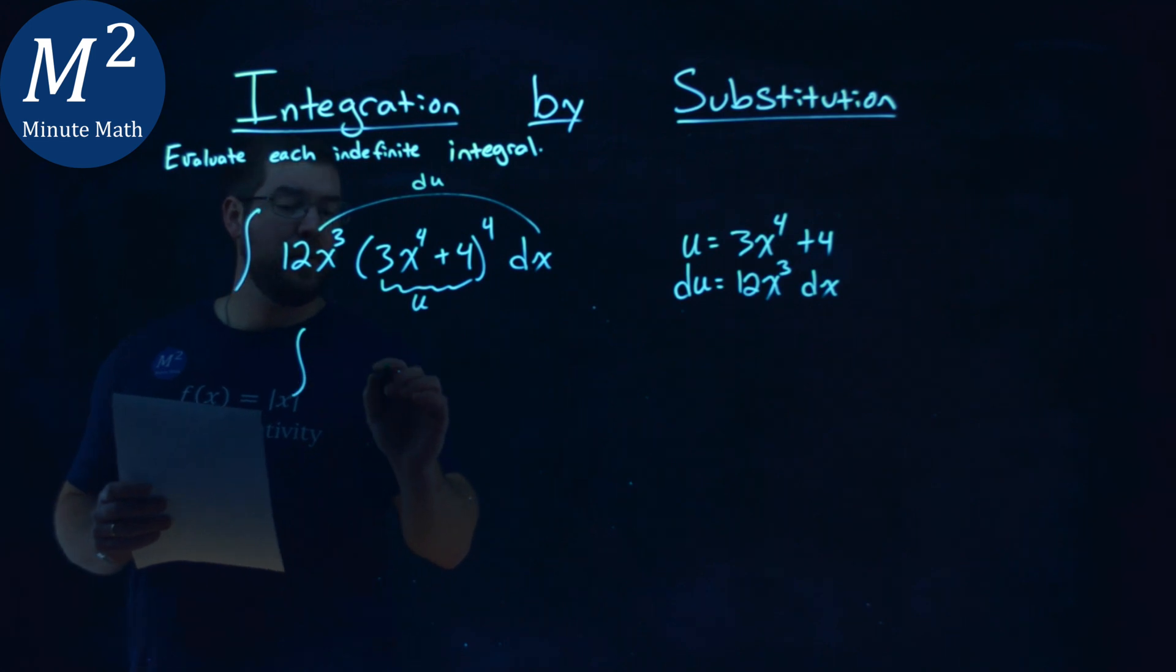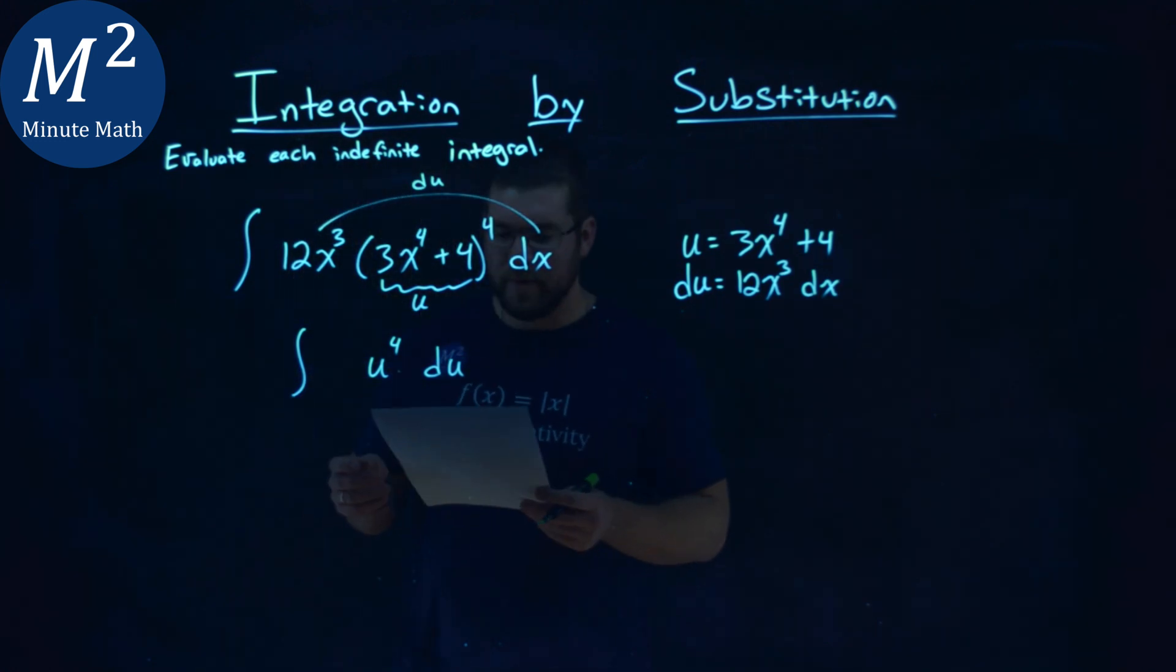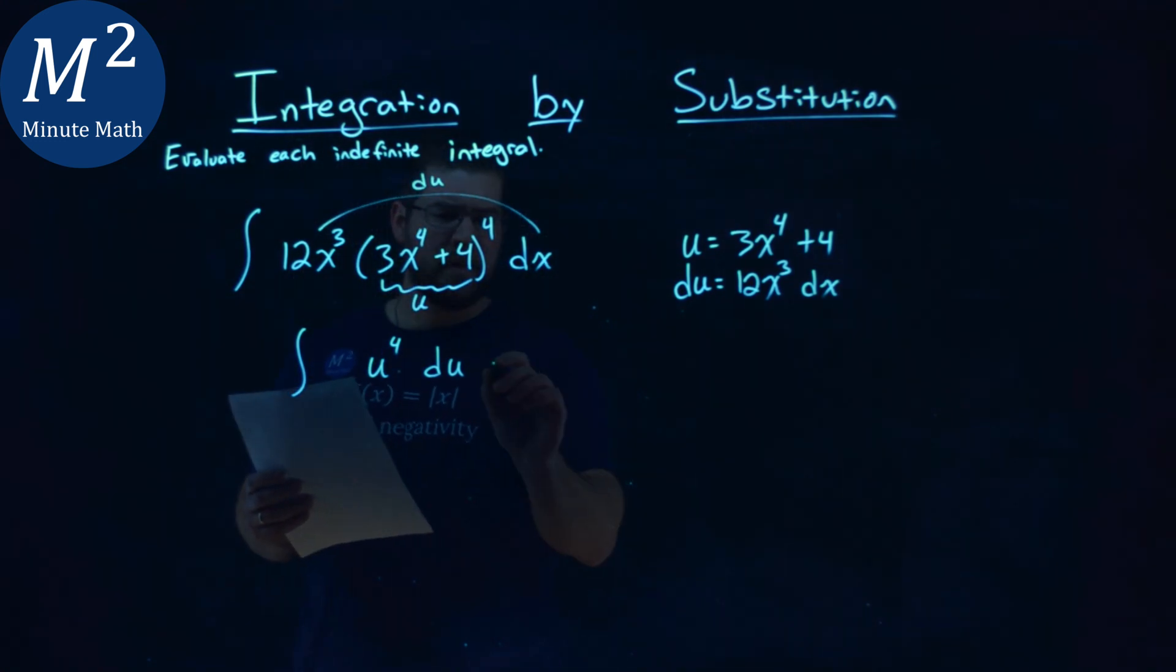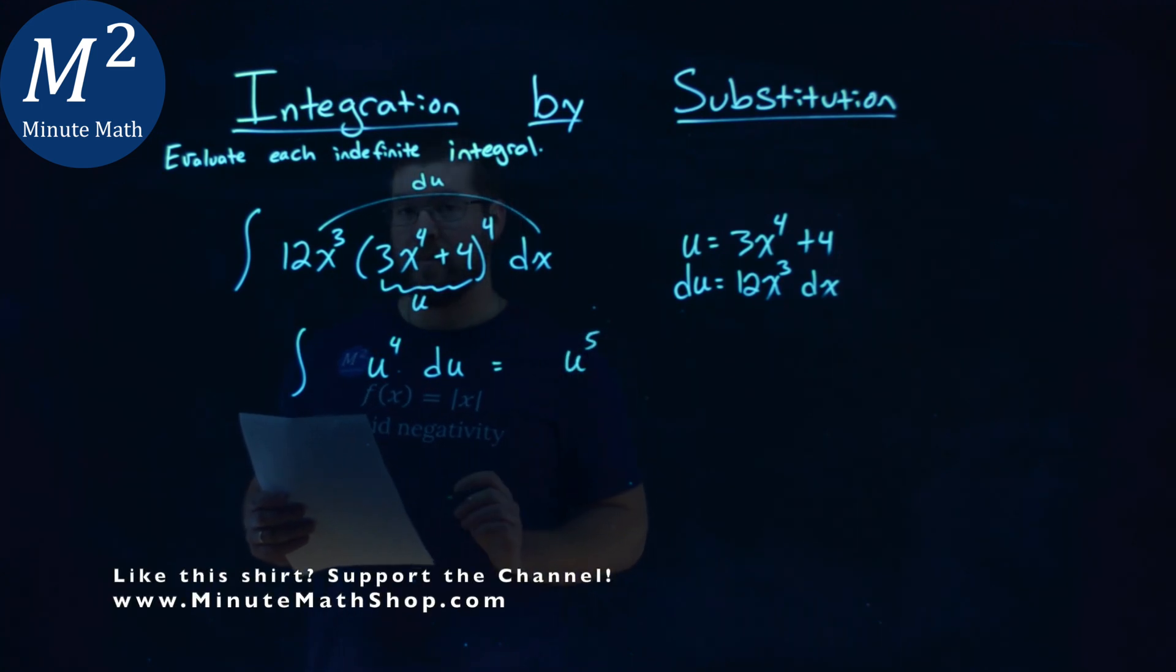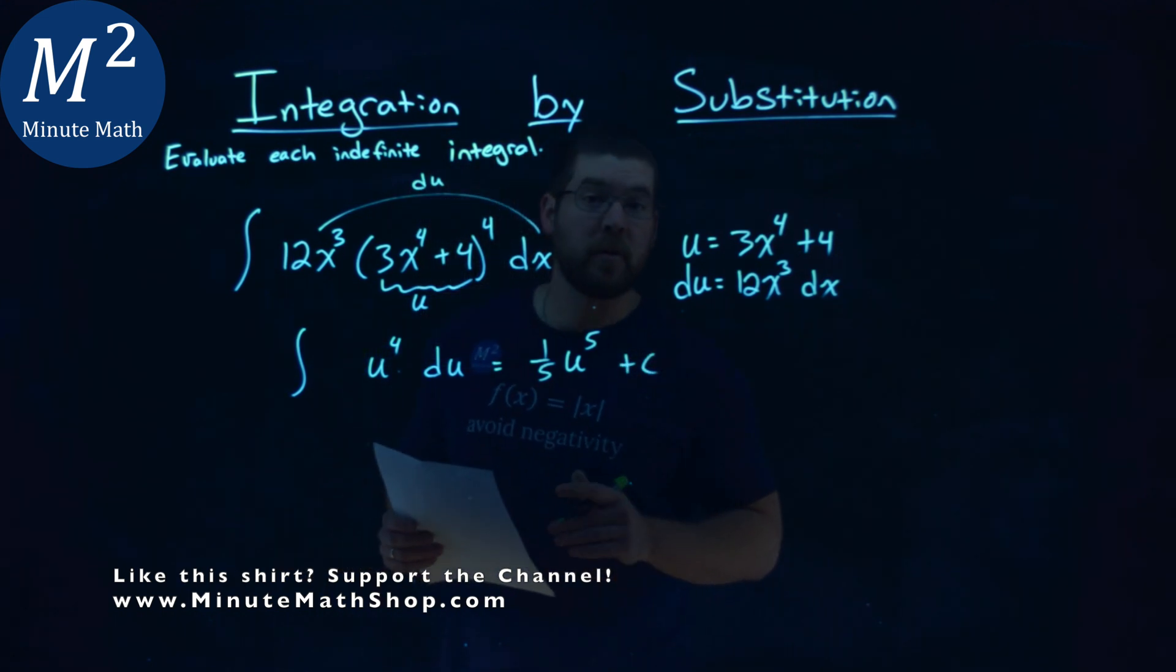So we have the integral now of u⁴ du. And this integral is much easier to solve. From there, we use the power rule. We have u to the fifth power, raised by 1. Counteract that with 1/5 out front. Then we have +c. Don't forget it.